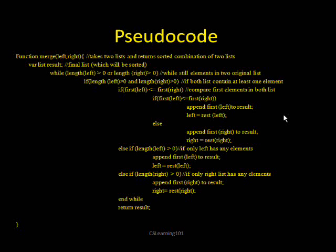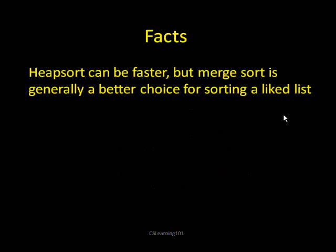Interesting fact — other sorts could be faster than this. The reason merge sort is effective is because it's only comparing two elements at a time: the first elements of the two arrays, which is a bit faster than some other sorts. Heap sort, which you can find in another video, is generally faster. But merge sort is usually a better choice when sorting something like a linked list. You can do further research on its efficiency. And that is how merge sort works — I hope you learned something today. Thank you for watching.